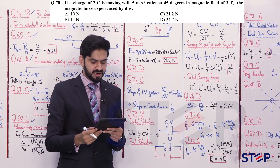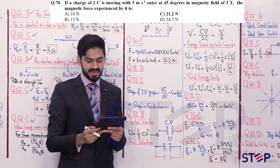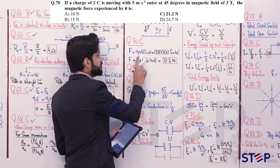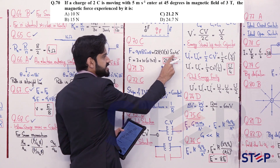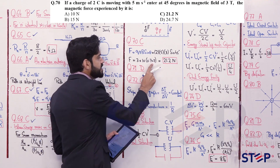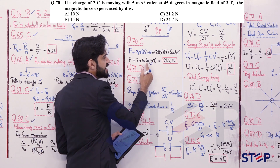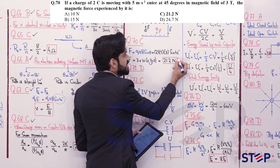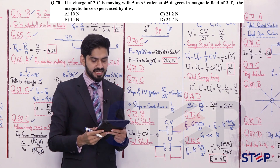Question 70: A charge of 2 coulomb moving with velocity 5 m/s enters at 45° in a magnetic field of 3 tesla. Using F = qvB sinθ: F = 2 × 5 × 3 × sin45° = 10 × 3 × 0.707 = 10 × 0.707 × 3 ≈ 7.07 × 3 ≈ 21.2 newton. The closest option is C — 21.2 newton.